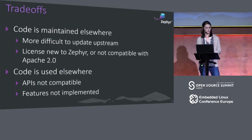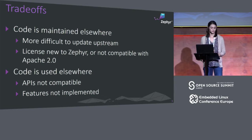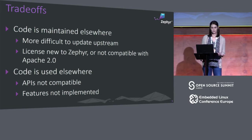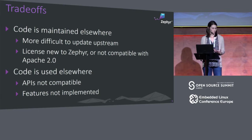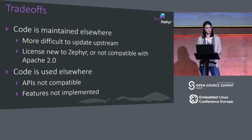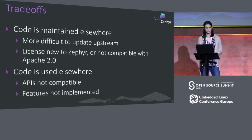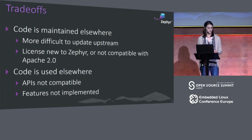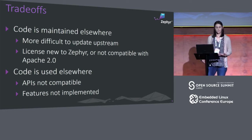The fact that code is used elsewhere can sometimes also be a trade-off. You might find that APIs are not necessarily compatible, making it difficult to use a transactional driver that the vendor provided — it just doesn't plug into the Zephyr driver model. Sometimes you might see that features aren't implemented: there's a feature available at the API level within Zephyr that maybe isn't implemented in the lower-level HAL driver. So we gain a lot of benefits from using these HALs, but there are some trade-offs.